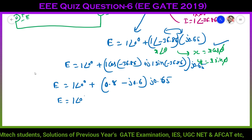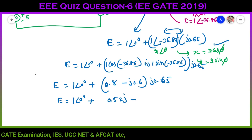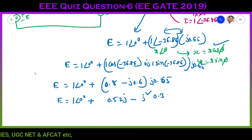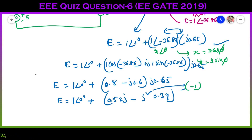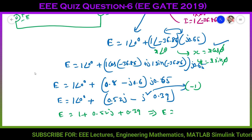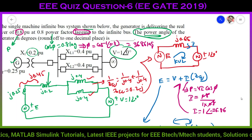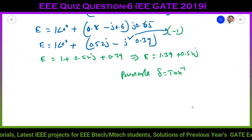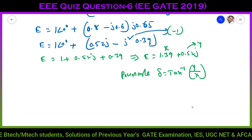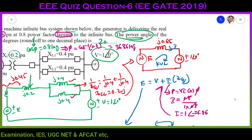So E = 1∠0° + 0.39 + j0.52 = (1 + 0.39) + j0.52 = 1.39 + j0.52. The power angle δ = tan⁻¹(0.52/1.39) = 20.5°. Rounded to one decimal place, the power angle of the generator is 20.5 degrees.